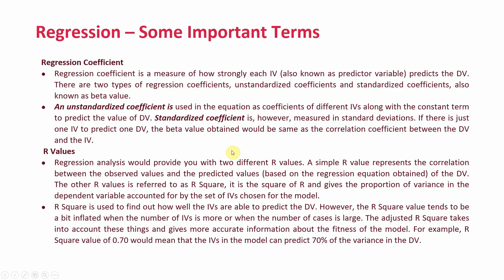The other important term is R values. Regression analysis provides two different R values. A simple R value represents the correlation between the observed values and the predicted values; in bivariate regression this is the correlation between the two variables. The other R value is R-square, which is the square of R and gives the proportion of variance in the dependent variable accounted for by the set of IVs chosen for the model. R-square is used to find out how well the IVs are able to predict the dependent variable. However, the R-square value tends to be a bit inflated when the number of IVs is large or when the number of cases is large.